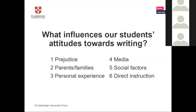Number five is social factors — what does everyone in the class think about writing? If everybody's saying that writing was so difficult or boring, that influences other kids. You get this group mentality, which works in positive as well as negative ways. And finally, number six: direct instruction — so how can we use this?